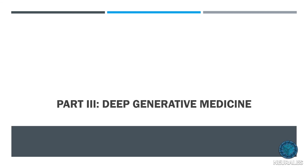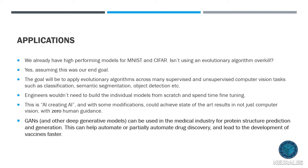Finally, part three: how can this apply to medicine? Since we already have high-performing GANs for MNIST and CIFAR, using an evolutionary algorithm for those would be overkill - that's not our end goal. Our goal is to apply this to really any deep learning task, supervised or unsupervised. Engineers don't have to build models from scratch and spend time fine-tuning, because the genetic algorithm does that by randomly initializing new models. This is truly AI creating AI, and with proper initialization, you could get state-of-the-art results not just in computer vision but any deep learning task.